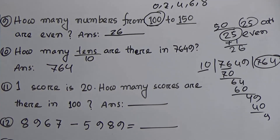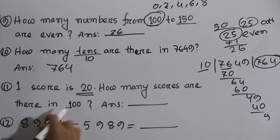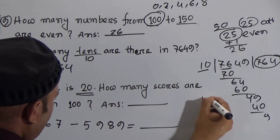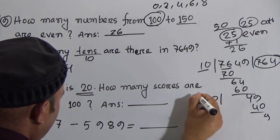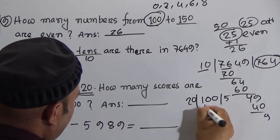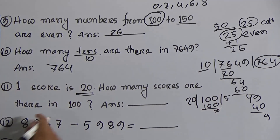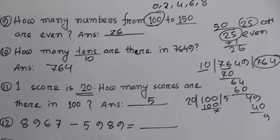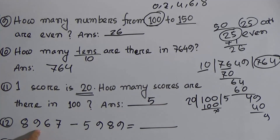Next: one score is 20. How many scores are there in 100? You have to divide 100 by 20. You know that 5 twenties are 100, so there are 5 scores. The answer is 5.